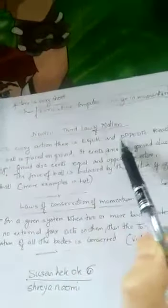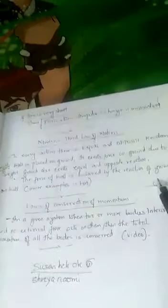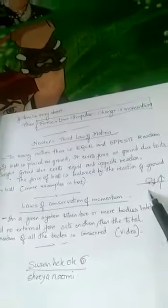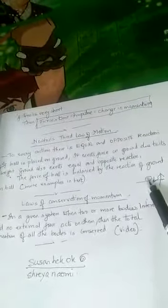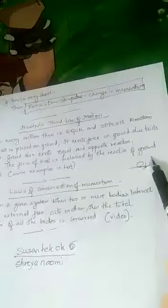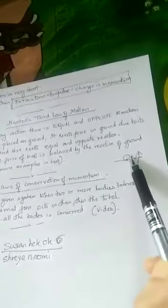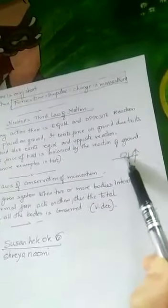Lastly, let us look into Newton's third law of motion. Newton's third law states that to every action there is an equal and opposite reaction. For example, if a ball is placed on the ground, it exerts a force on the ground due to its weight. The ground also exerts an equal and opposite reaction. The force of the ball is balanced by the reaction of the ground on the ball — that is how the ball remains in position.